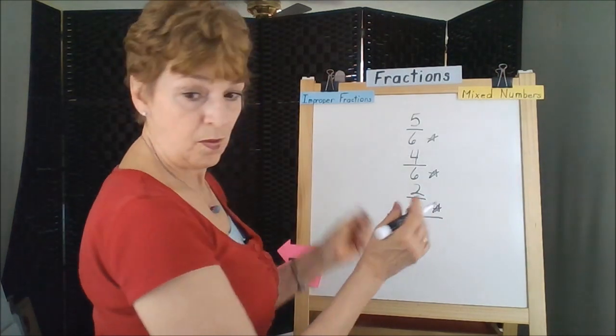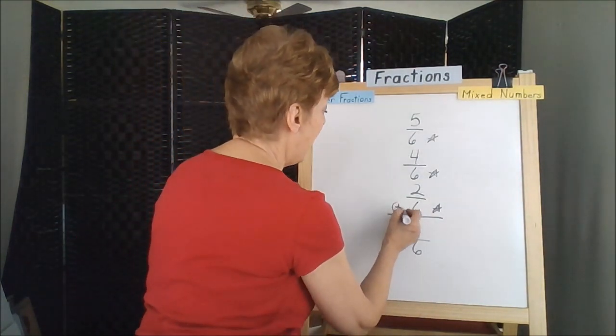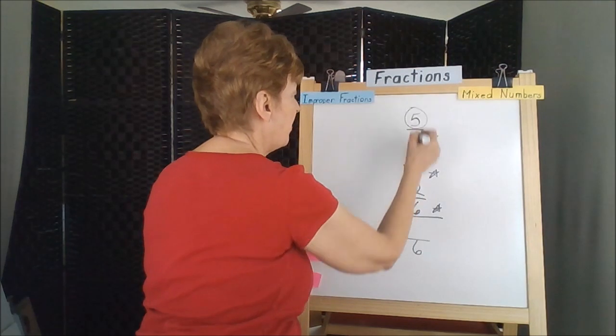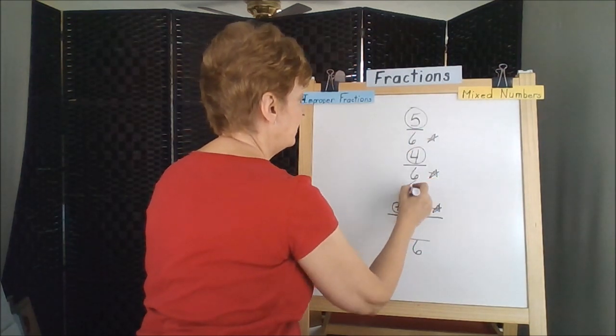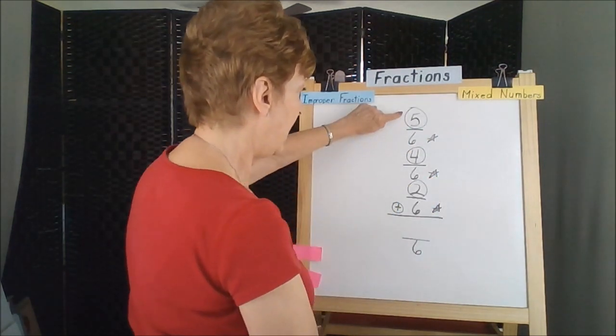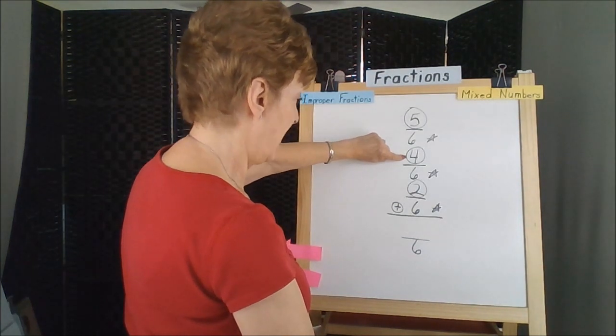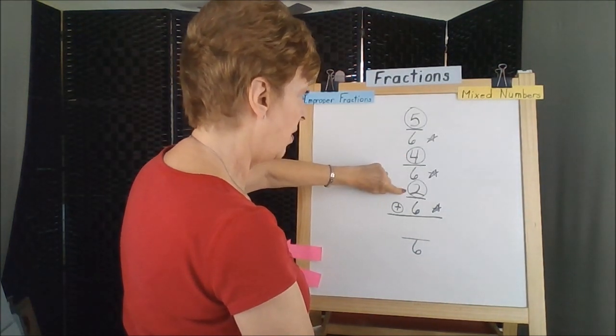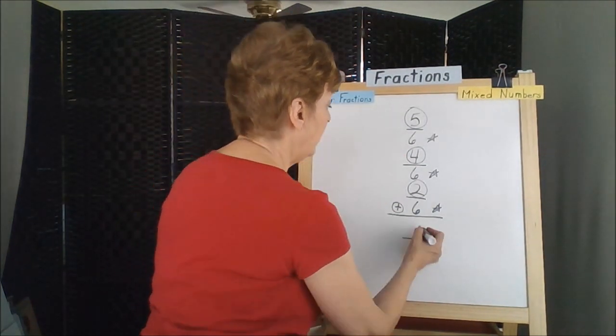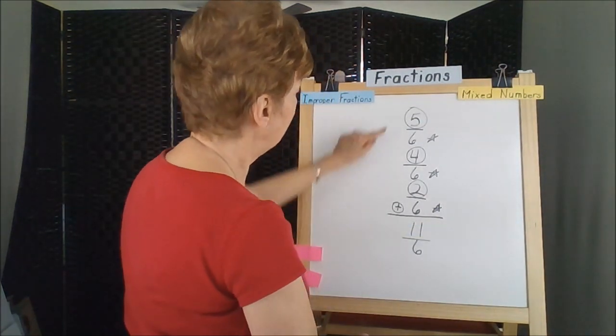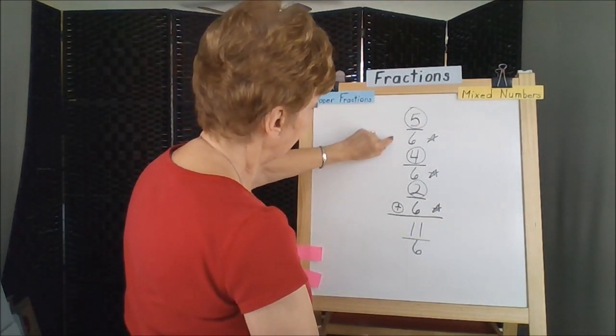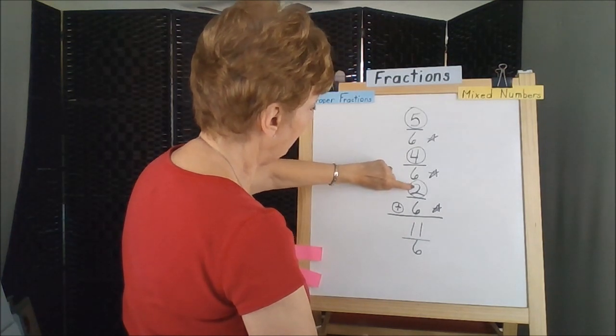This is in the whole, and now we're going to add the numerators of the fraction. Five plus four is nine and two more are eleven. We have eleven sixths.